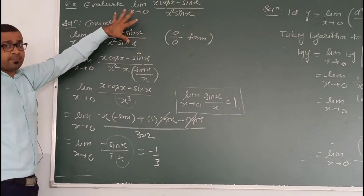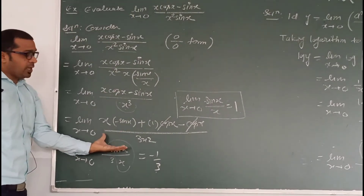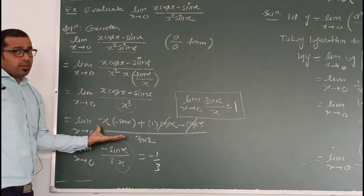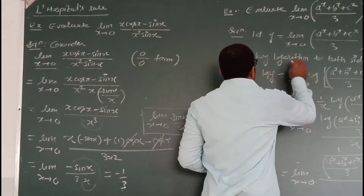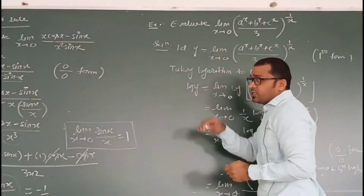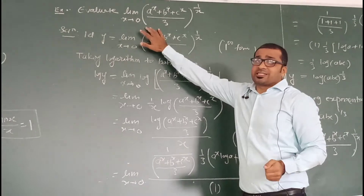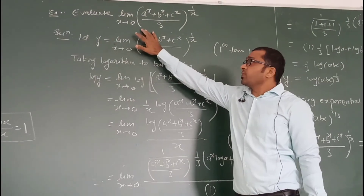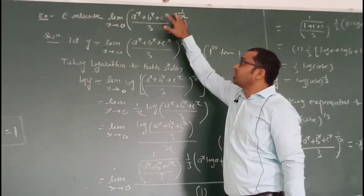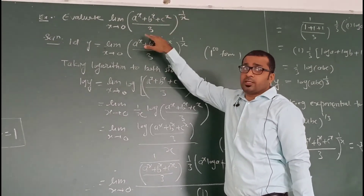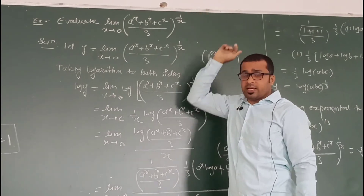This is the required limit value found by L'Hospital's rule. Now the next example: evaluate the limit as x tends to 0 of (aˣ + bˣ + cˣ)/3 to the power 1/x.